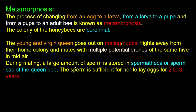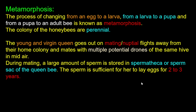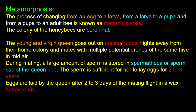During mating, a large amount of sperm is stored in the queen bee's sperm sack. This is a sufficient amount of sperm for 2 to 3 years. After the mating flight, eggs are laid in a wax honeycomb.